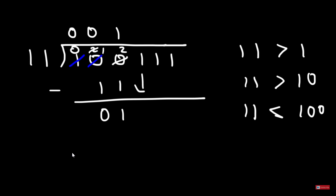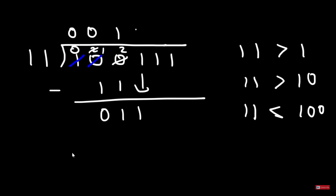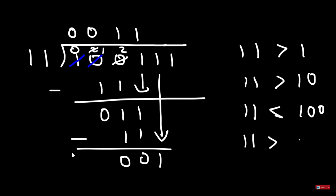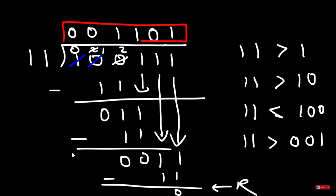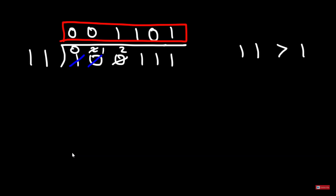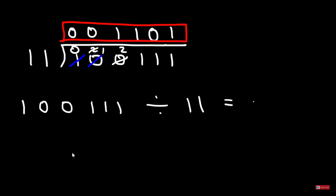We bring down the next one. One one and zero one one have the same value, so one one goes into zero one one one time — giving one one. Subtracting gives zero and zero. Bringing down the next one: one one is greater than zero zero one, so one one goes into that zero times. Bringing down the final one: one one goes into one one one time, with a remainder of zero. Once the remainder is zero, we stop — this is the answer.